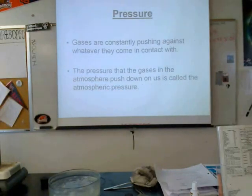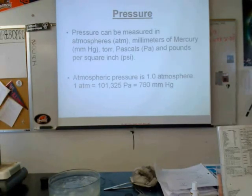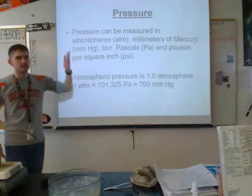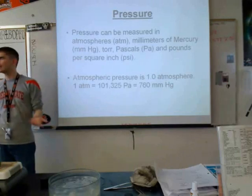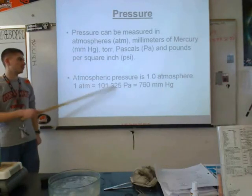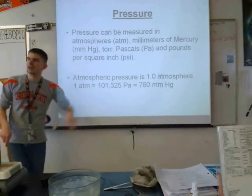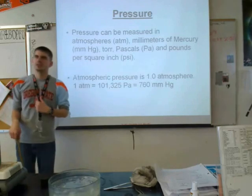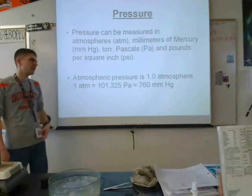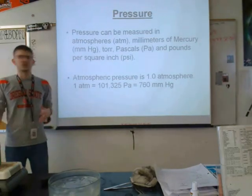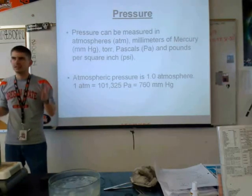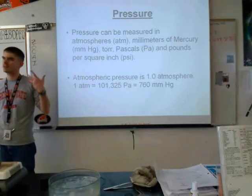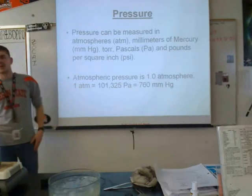We can measure atmospheric pressure in lots of ways. My personal favorite is in atmospheres — one atmosphere is atmospheric pressure, so it makes it kind of easy and relatable. But 101,325 pascals or 760 millimeters of mercury is also atmospheric pressure. If I tell you something is at 1,000 millimeters of mercury, you can't really picture that, but if I say one and a half atmospheres, that makes more sense. So I like to go with atmospheres.